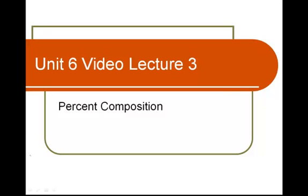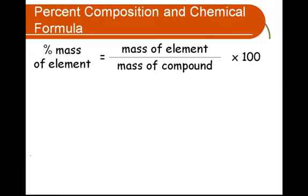Lecture 6, Video Lecture 3: Percent Composition. To figure out the percent composition of a substance, we're going to take the mass of the element and divide it by the mass of the compound. We then take this and multiply it by 100 because we're moving from a decimal to a percent.